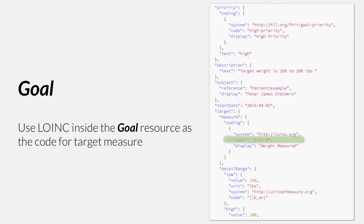In addition, you might want to use LOINC in the context of creating goals. For example, if you're trying to express a patient goal where the goal is to achieve a particular value on a target measure, identifying what that target measure is — such as body weight — you can set that goal context and say, what I'm looking for is a measured weight that is whatever your target is. So you can use LOINC in that context as well.